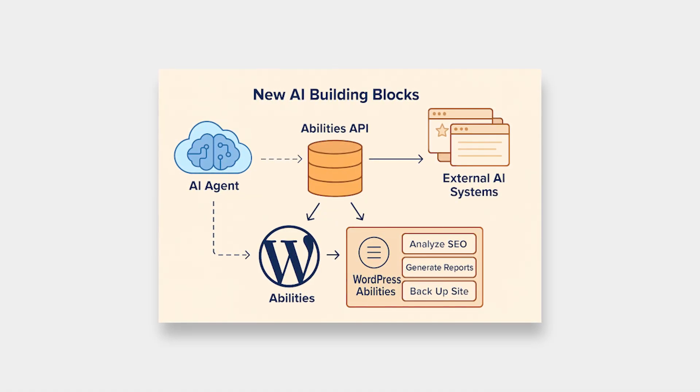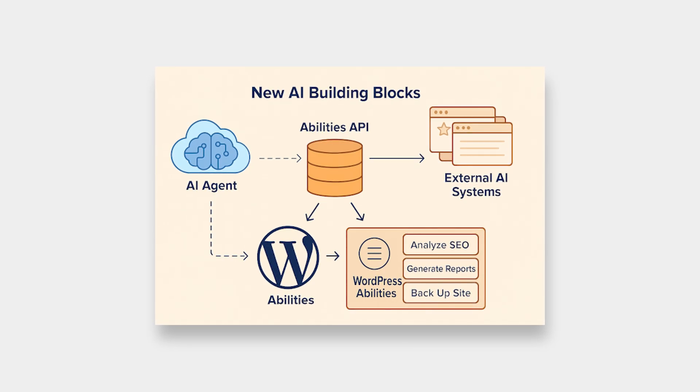Normally, making changes to your WordPress site requires installing a plugin or editing code. The Abilities API gives a shared language that both humans and AI systems can understand. Plugins can register capabilities — like 'optimize blog posts' — and expose them via the API to AI tools. In the future, you'll likely be able to connect ChatGPT to say 'optimize this blog post' and it will do it. This opens up workflows for designing, managing, and optimizing websites with AI tools.